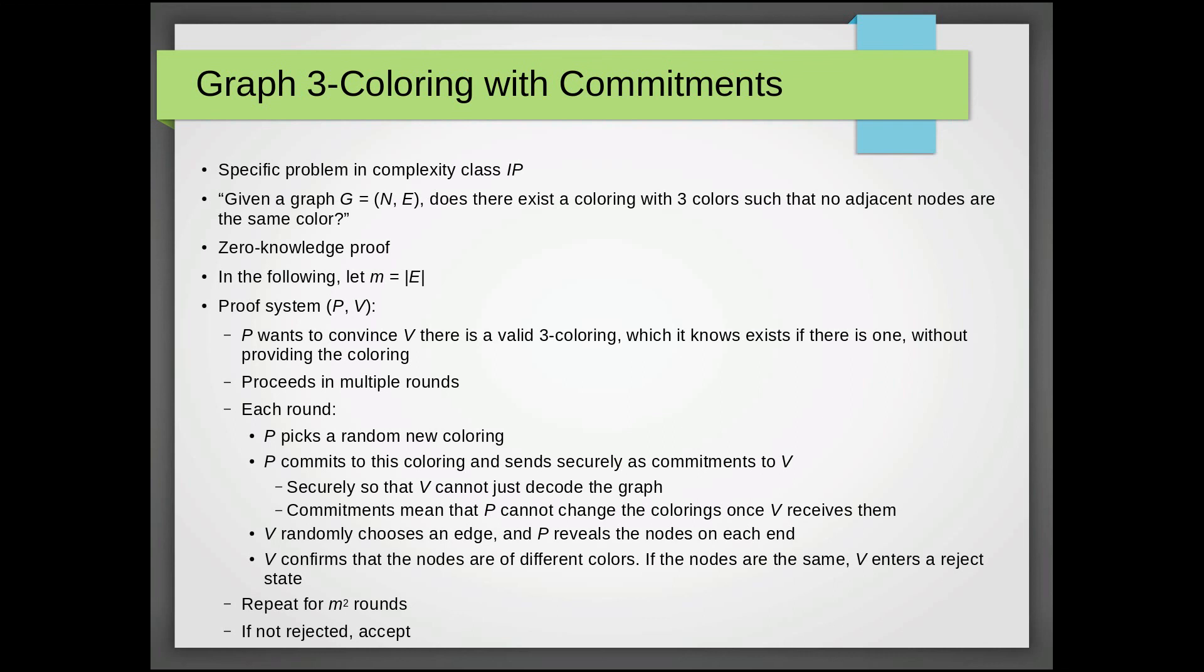So we repeat this for M squared rounds. Every time we repeat this, we're building up our confidence that this graph does have a valid three coloring. This is because with every repeated time we do this, we do not find an edge with two adjacent nodes of the same color.